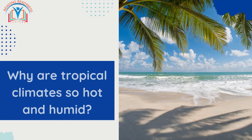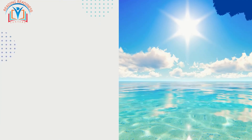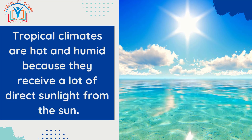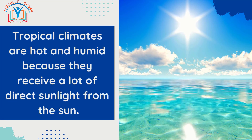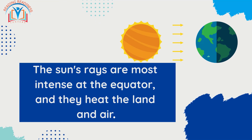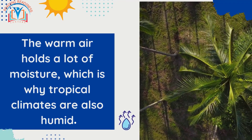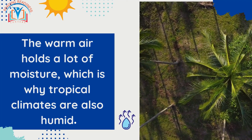Why are tropical climates so hot and humid? Tropical climates are hot and humid because they receive a lot of direct sunlight. The sun's rays are most intense at the equator, and they heat the land and air. The warm air holds a lot of moisture, which is why tropical climates are also humid.